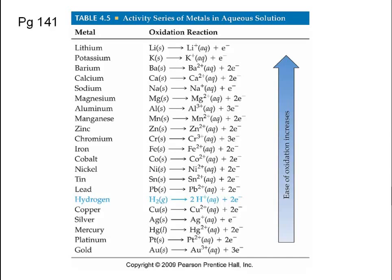This list is very important. Some single replacement reactions won't occur — for example, zinc trying to react with magnesium chloride. Look at where zinc is compared to magnesium: zinc is further down the list. Zinc won't bond with chlorine from magnesium chloride because magnesium is more reactive and will hold on to it. So a reaction between zinc and magnesium chloride would not occur — there would be no reaction.